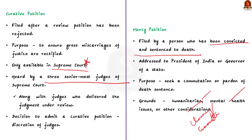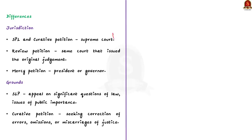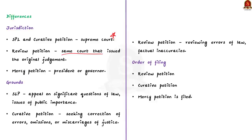Key differences between the four petitions: SLP and curative petition are filed before the Supreme Court; review petition is filed in the same court that issued the original judgment; mercy petition is filed before the President or Governor. Regarding grounds: SLP is for significant questions of law or fundamental rights; curative petition is for correcting errors or miscarriage of justice; review petition is for errors of law or factual inaccuracies. Order of filing: first a review petition, then a curative petition, and lastly a mercy petition.